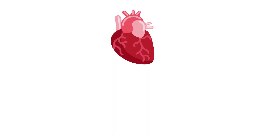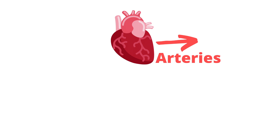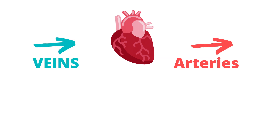Blood vessels assist the heart by carrying blood to the body and back to the heart. We have arteries that typically direct oxygenated blood away from the heart, and then we have veins that typically bring deoxygenated blood back towards the heart.